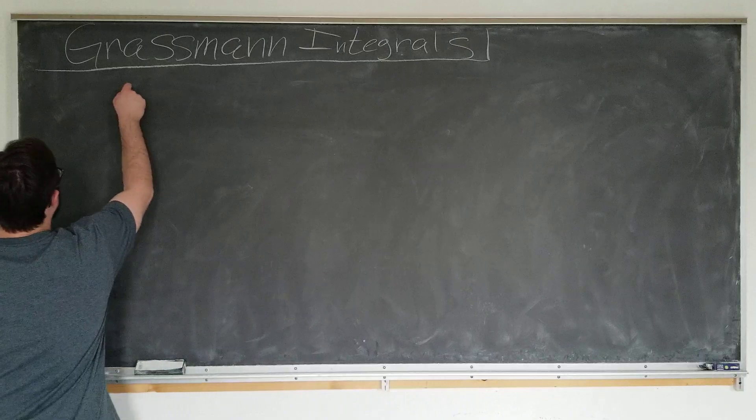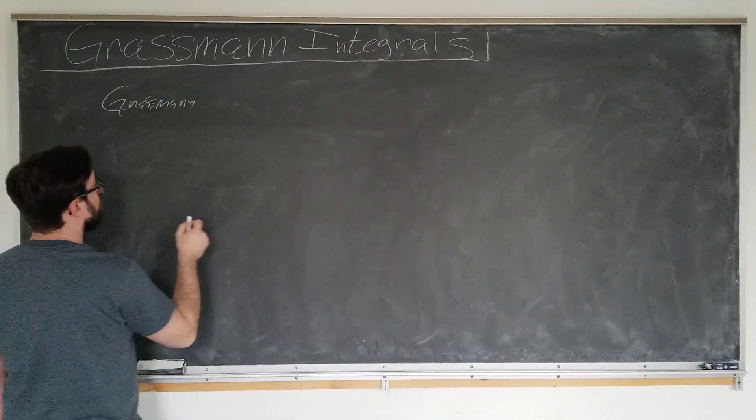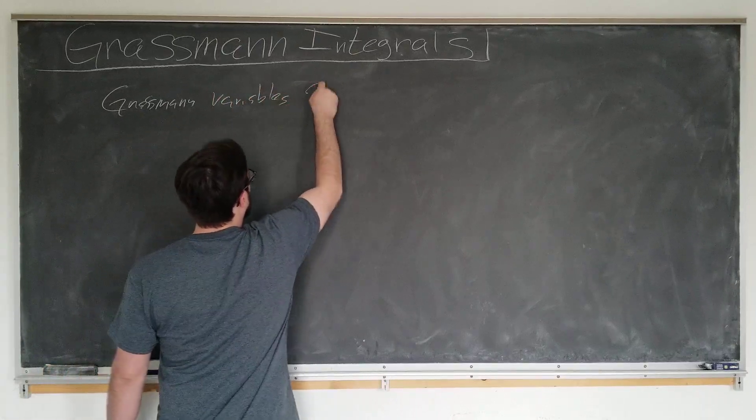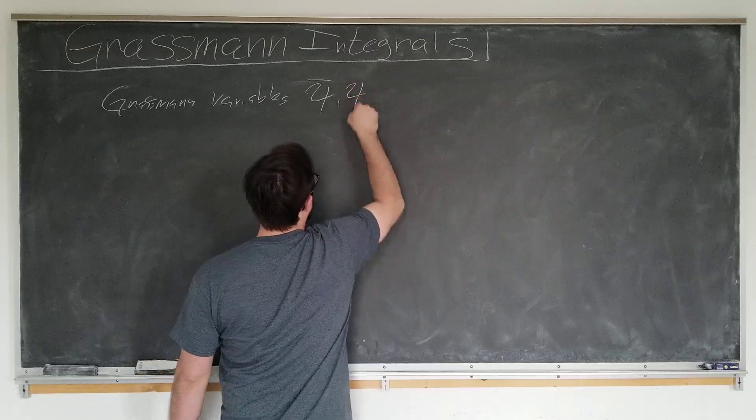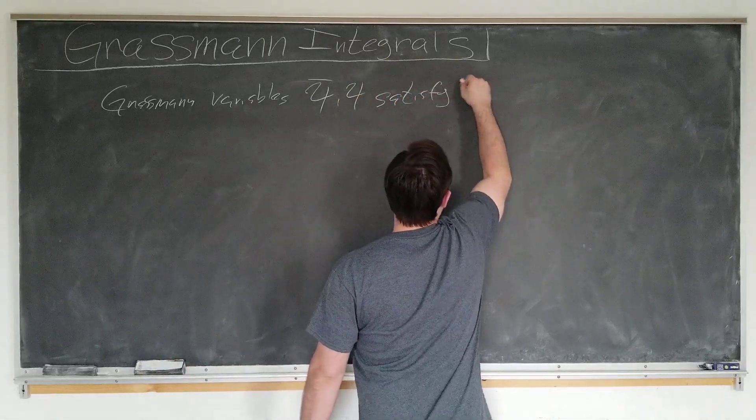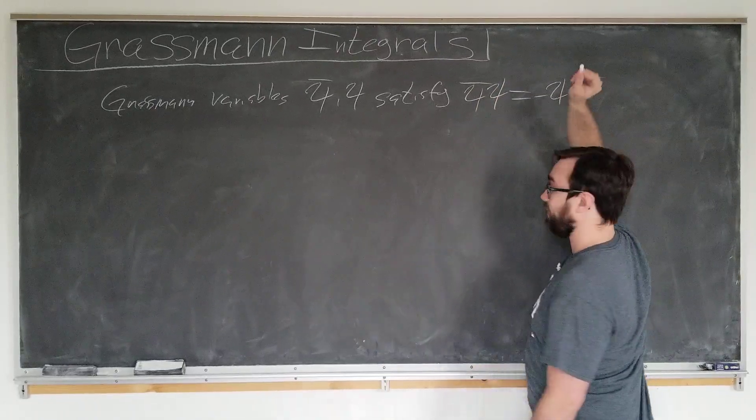Now, Grassmann variables, two s's and two m's because he's German, calling them psi bar and psi, satisfy the property psi bar psi equals minus psi psi bar, or they anti-commute.